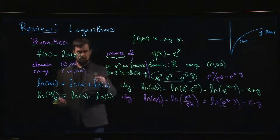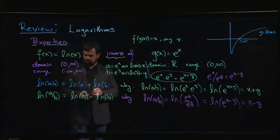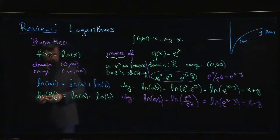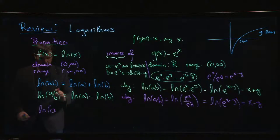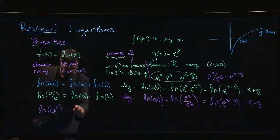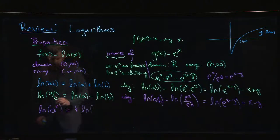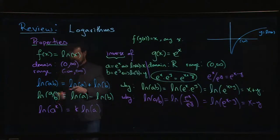The last property, which can be quite useful, is that the natural log of a raised to a power k equals k times the natural log of a. This tells you that logarithms simplify exponentiation — taking a power, which is a fairly complicated arithmetic operation, and turning it into multiplication.